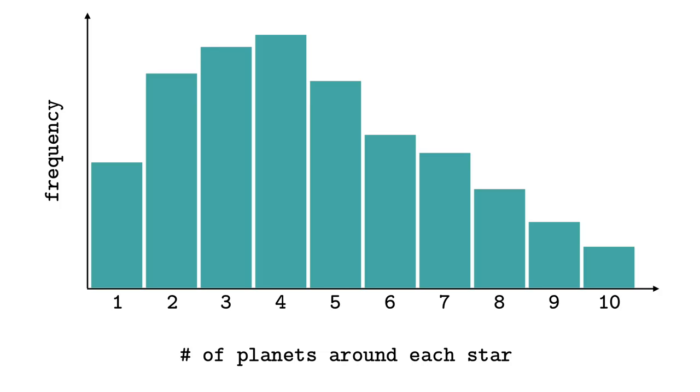What David and I set out to investigate in this paper is: how common are the different multiplicities overall, and is there some kind of simple mathematical rule that describes them? The reason this is interesting is because it could tell us something about planet formation.